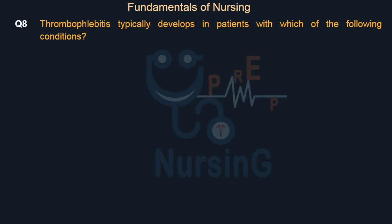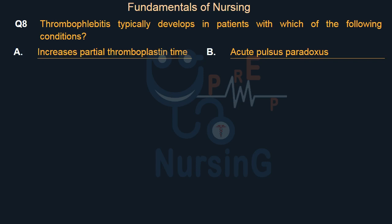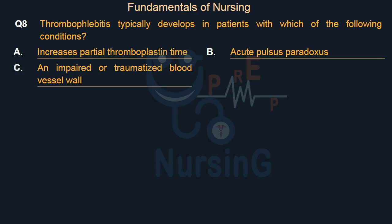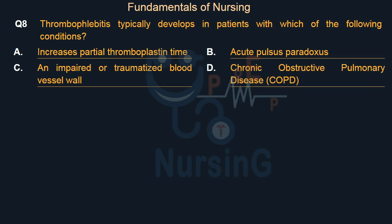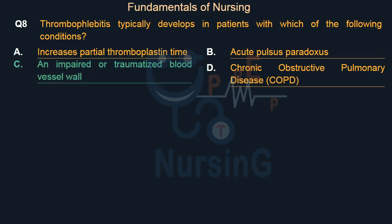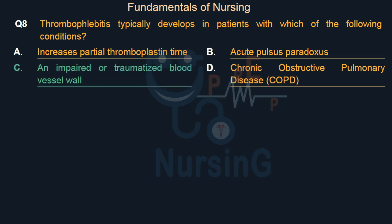Thrombophlebitis typically develops in patients with which of the following conditions? Option A: Increased partial thromboplastin time. Option B: Acute pulsus paradoxus. Option C: An impaired or traumatized blood vessel wall. Option D: Chronic obstructive pulmonary disease (COPD). Right answer is Option C: An impaired or traumatized blood vessel wall.